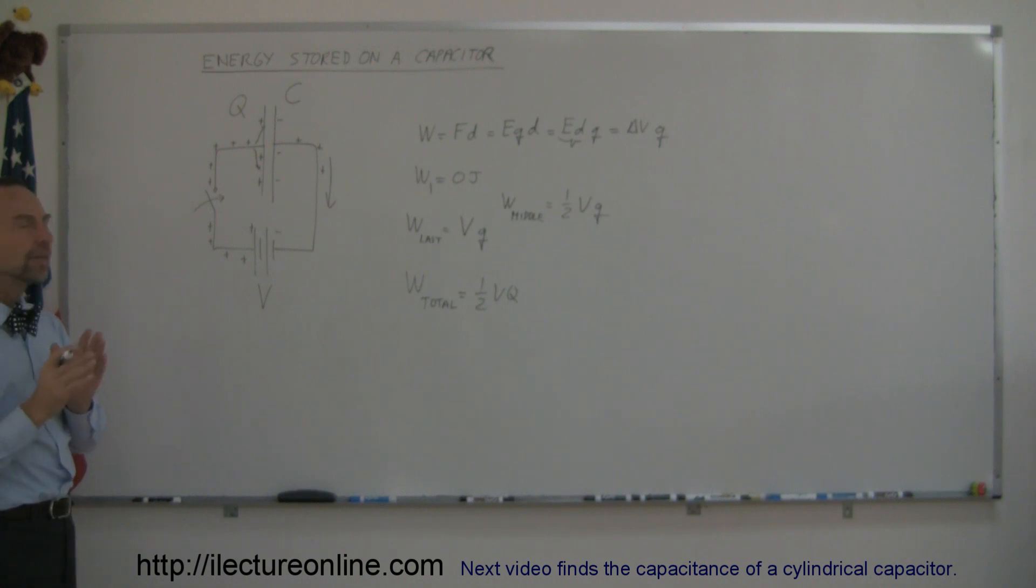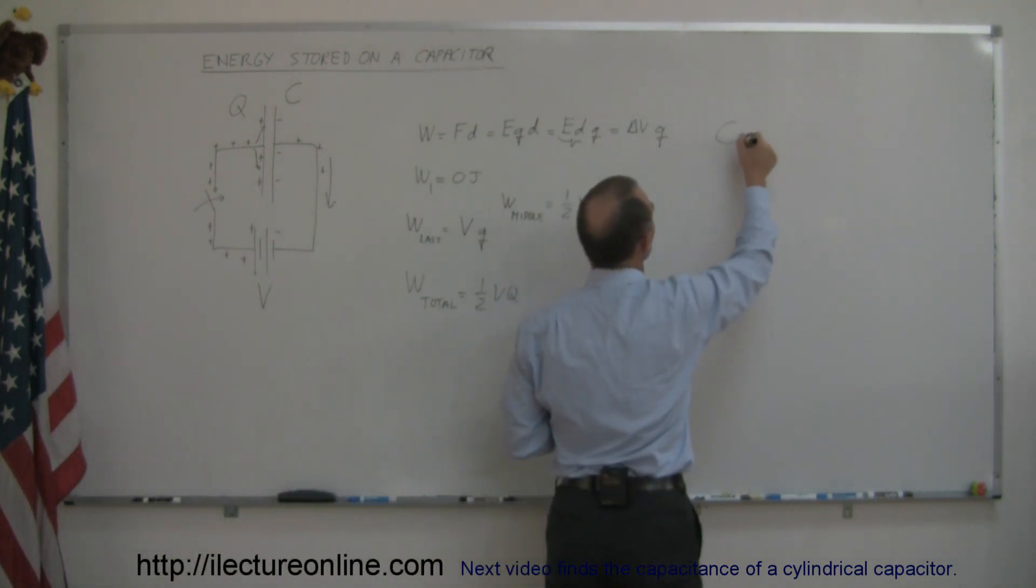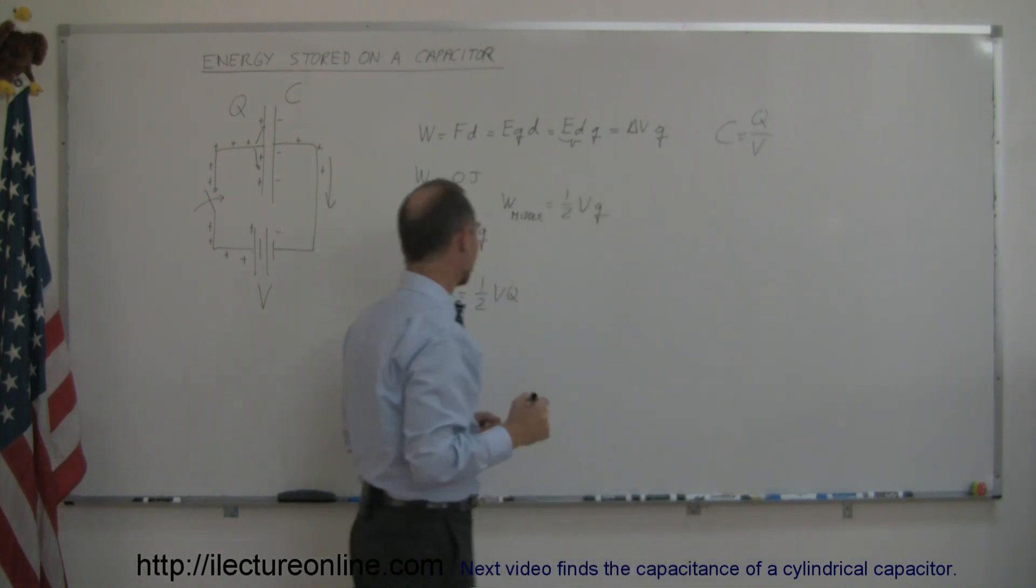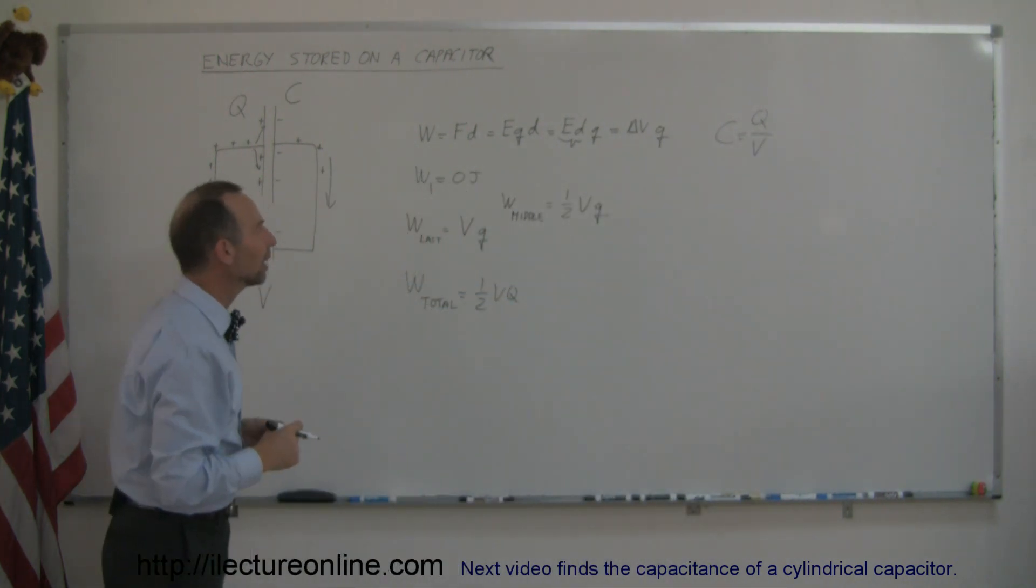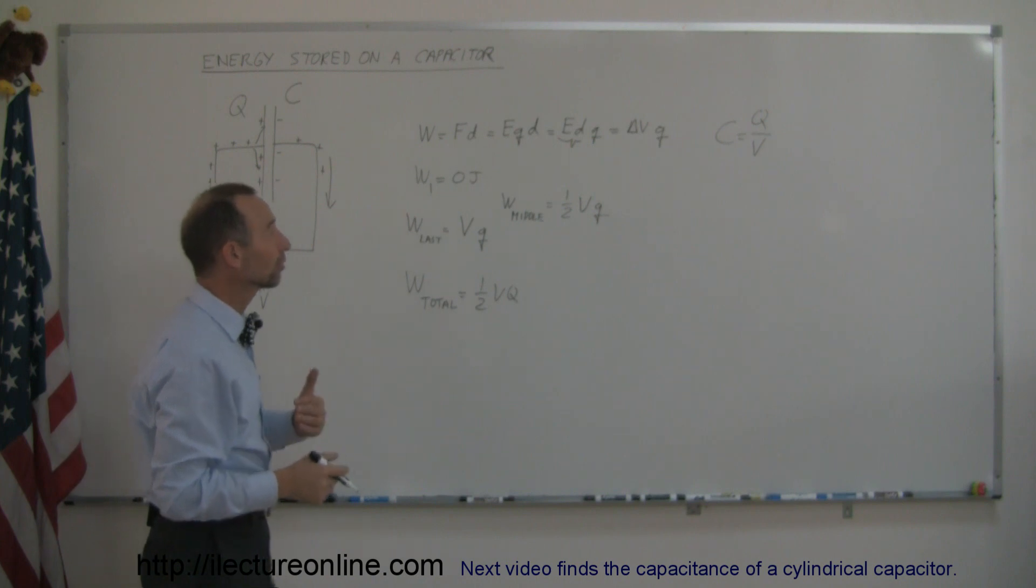Now, going back to the definition of capacitance, we can say that the capacitance is simply equal to the ratio of the charge that you put on the capacitor divided by the voltage you put on there. So, we could potentially replace Q by C times V, or we could potentially replace V by Q over C.